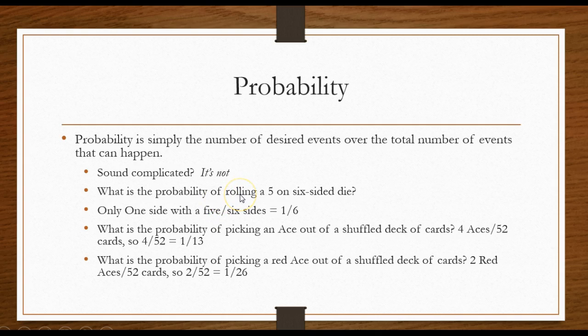Probability. Hopefully, you are in statistics to learn a little bit about probability, and I'm betting that you'll have probability on your undergraduate statistics final. Probability is simply the number of desired events over the total number of events that can happen. Sound complicated? It's really not. What's the probability of rolling a five on a six-sided die? Well, there's only one five on a six-sided die, unless you're playing with some kind of funky dice, so it'd be one out of six. What is the probability of picking an ace out of a shuffled deck of cards? There's four aces, fifty-two cards, four out of fifty-two simplifies to one thirteen.